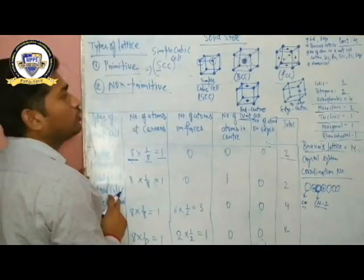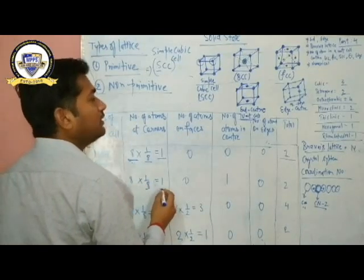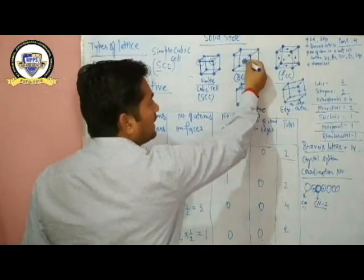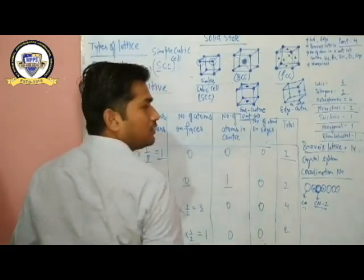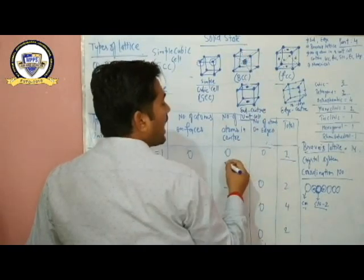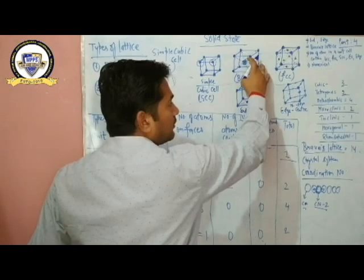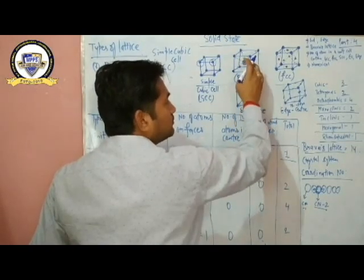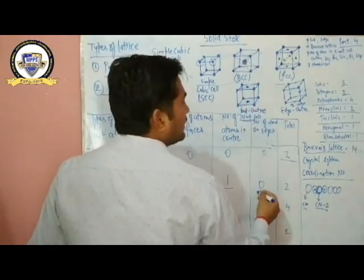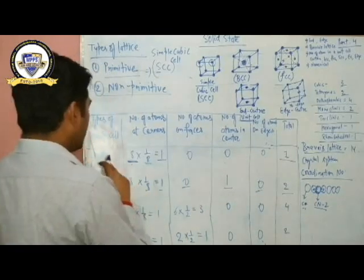The second one is body-centered cubic (BCC). In BCC, corner atoms again contribute 8 × 1/8 = 1. There are no atoms on the faces, so that is zero. One single atom is present inside the unit cell at the body center. This body-center atom is coordinated with eight corner atoms, so its coordination number is 8. Total number of atoms in BCC = 1 + 1 = 2.